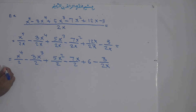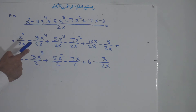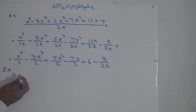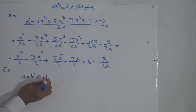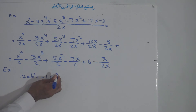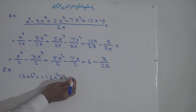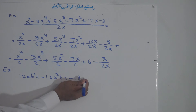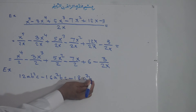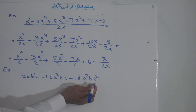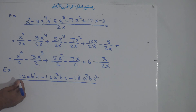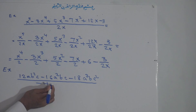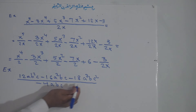Now we solve another example. We can do this without separating the denominators. We have: 12ab to the power of 2 c, minus 16a to the power of 2 bc, minus 18a to the power of 3 b to the power of 1 c to the power of 2, all over minus 4abc.